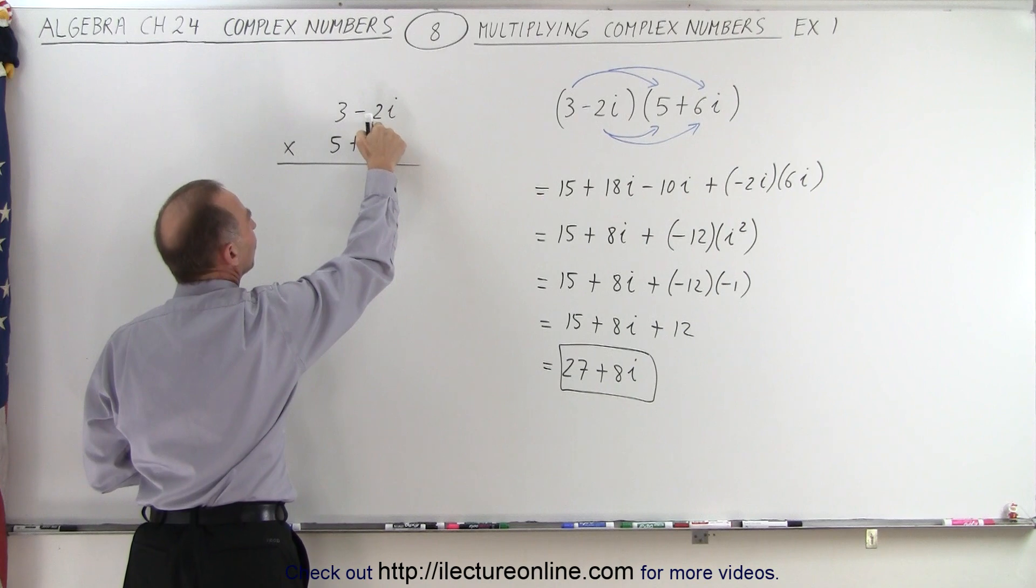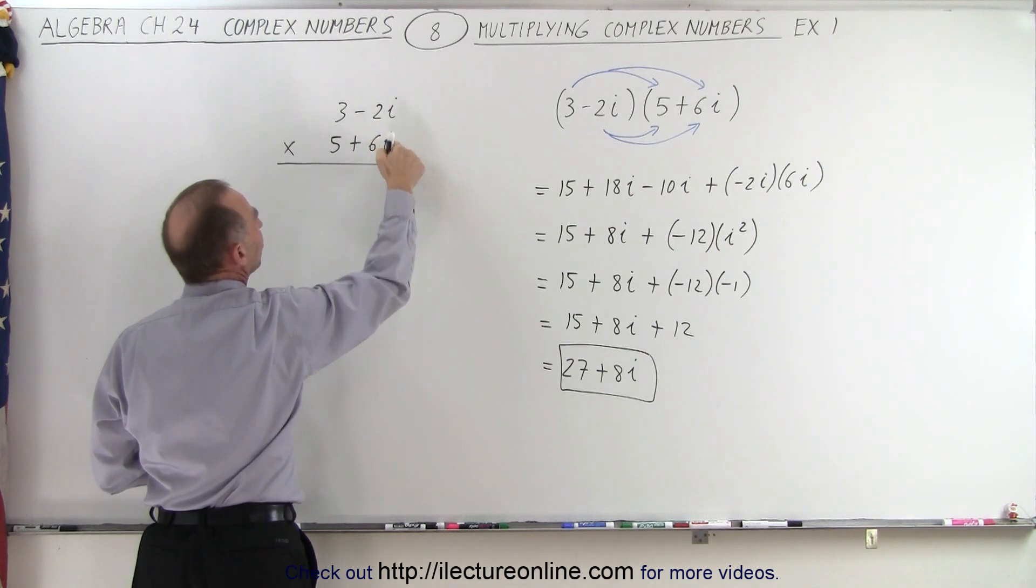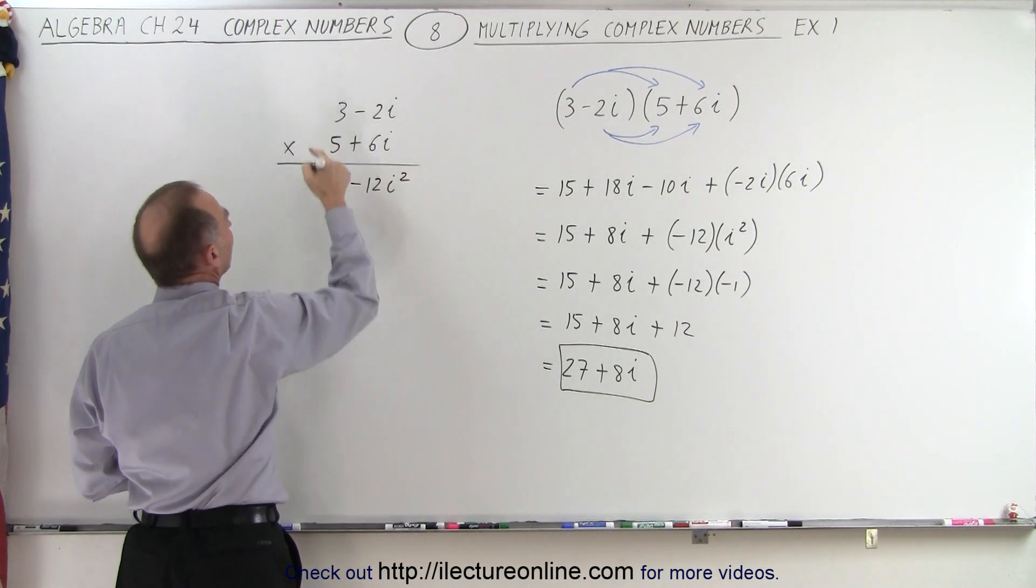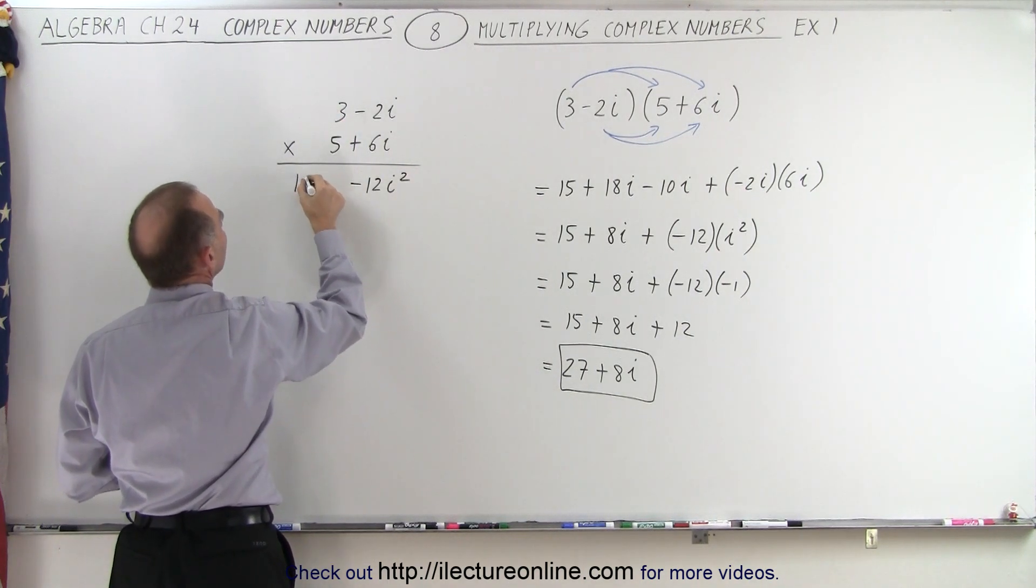6 times a negative 2 is negative 12, times i times i, which is i squared. So we get negative 12 times i squared. 6i times 3, that gives us plus 18i.